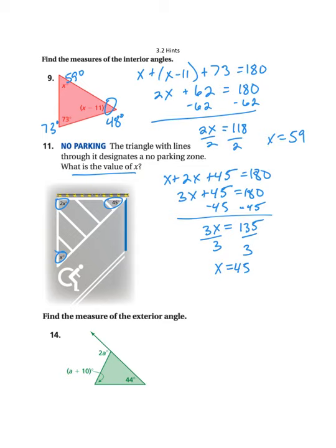On our next few problems, we're asked to find the measure of the exterior angle. So if we remember that any exterior angle is equal to the sum of the two interior angles that are not adjacent to that exterior angle. So not this one here, not that one, but the other two.